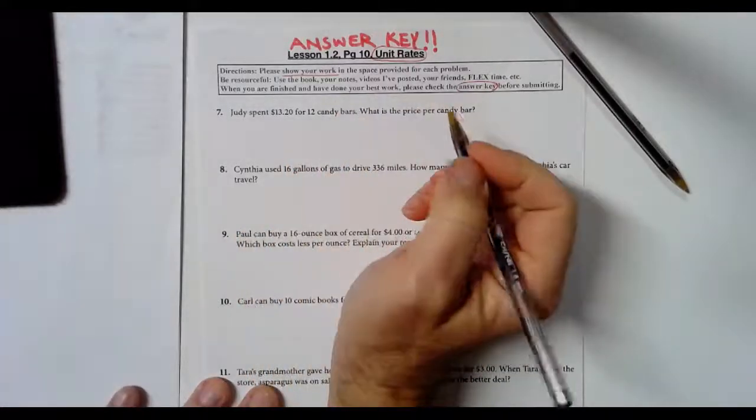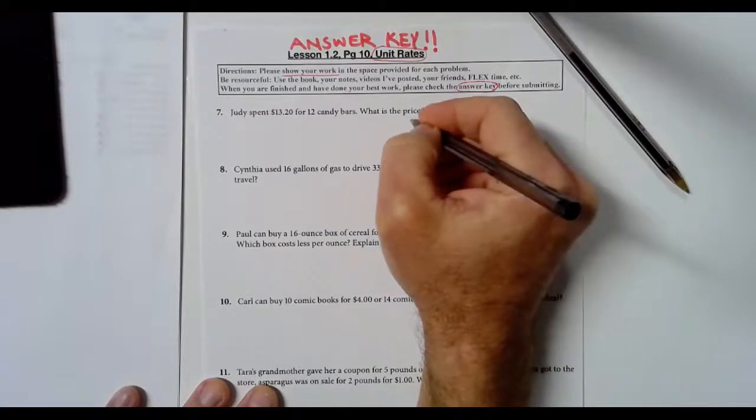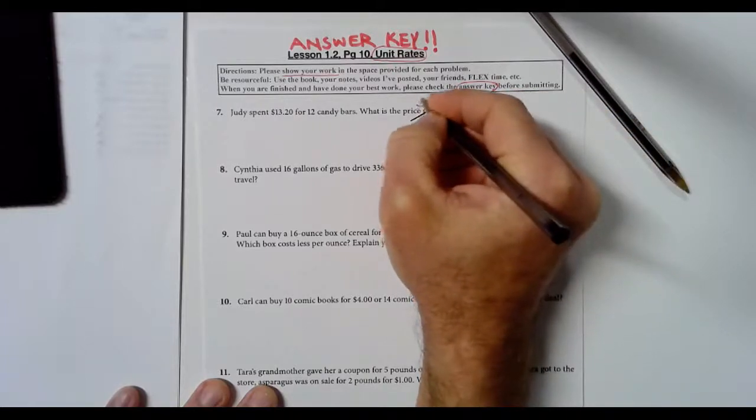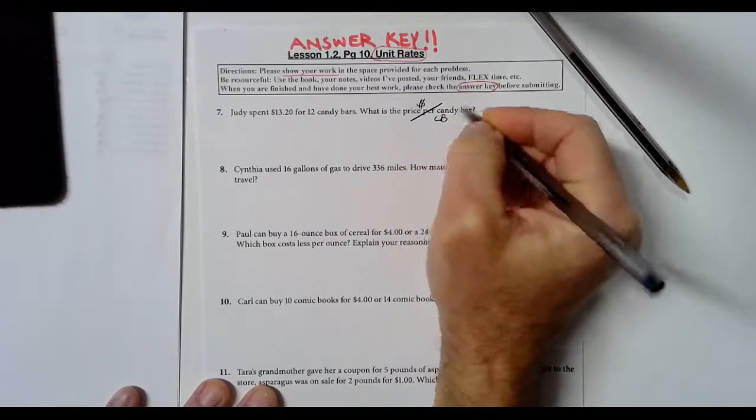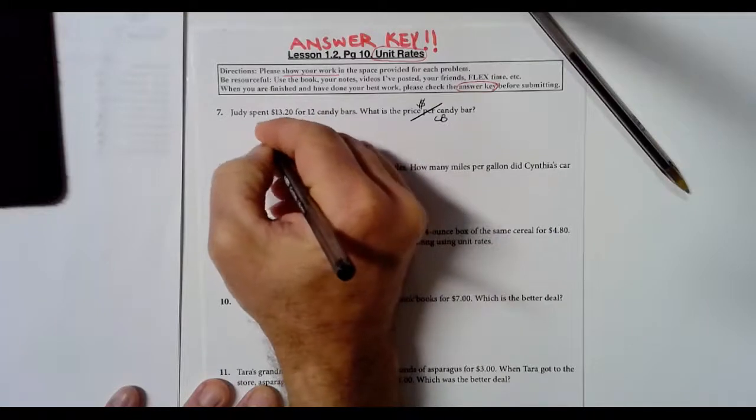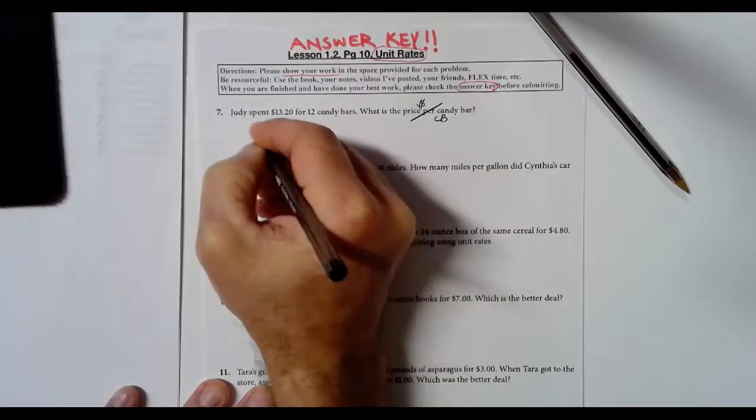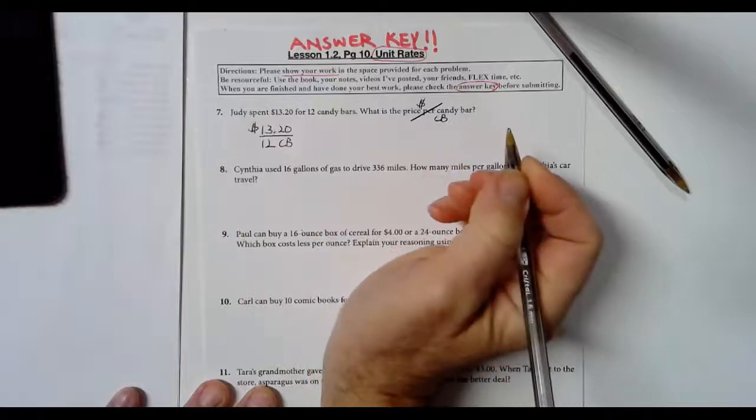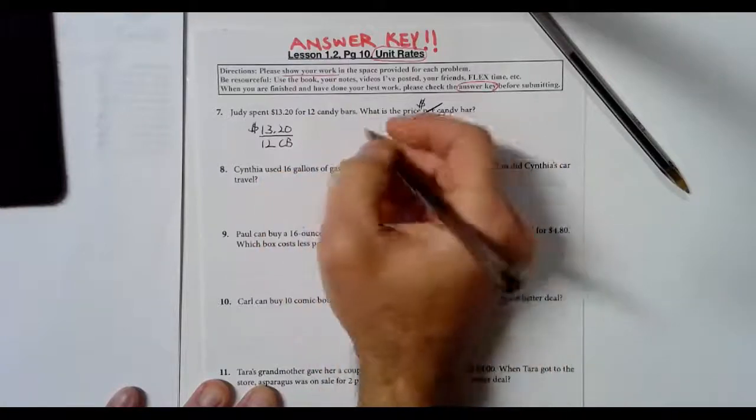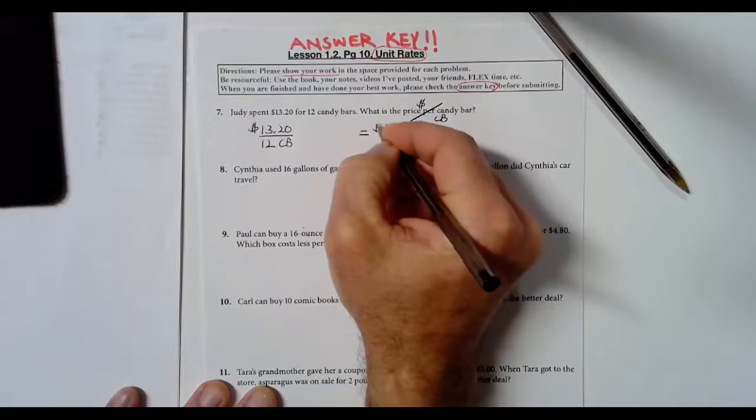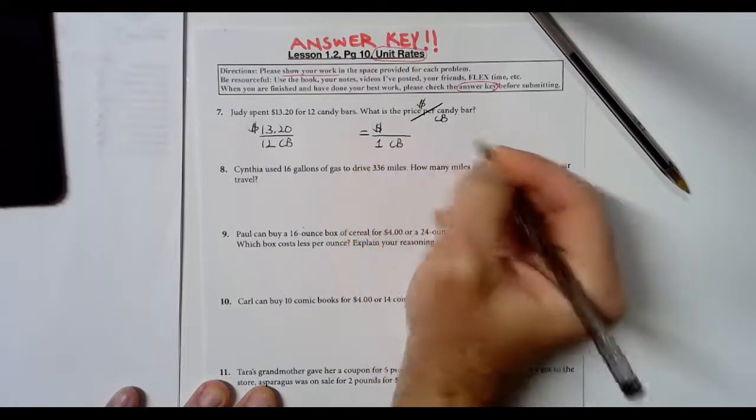Judy spent $13.20 for 12 candy bars. What is the price per candy bar? Think of the word per as the fraction bar. So on top we would have dollars and on the bottom we have candy bars, which I'm going to label as CB. So we've got $13.20 per 12 candy bars. It's a ratio, not a fraction, so I need to label everything.